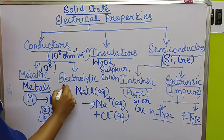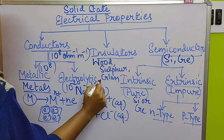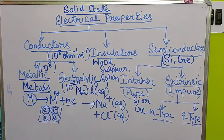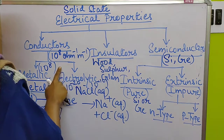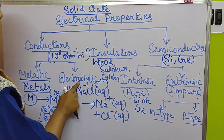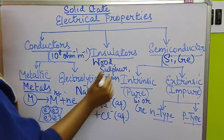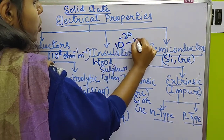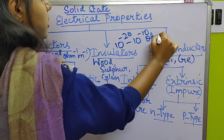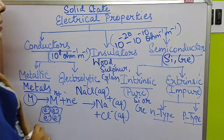For electrolytic conductors, the value is in the range of 10² to 10⁻¹⁰ ohm⁻¹ metre⁻¹. For insulators, the value is in the range of 10⁻²⁰ to 10⁻¹⁰ ohm⁻¹ metre⁻¹.